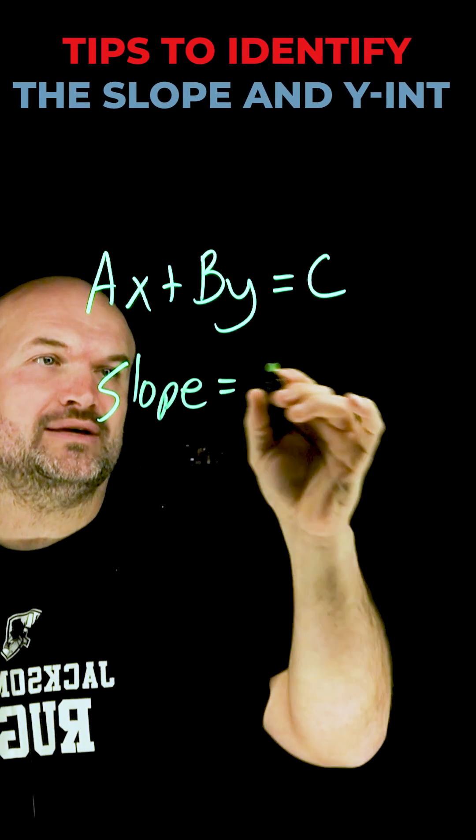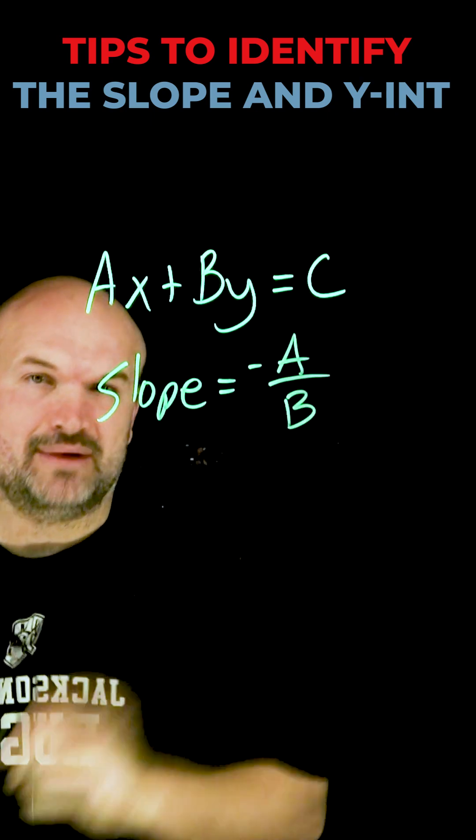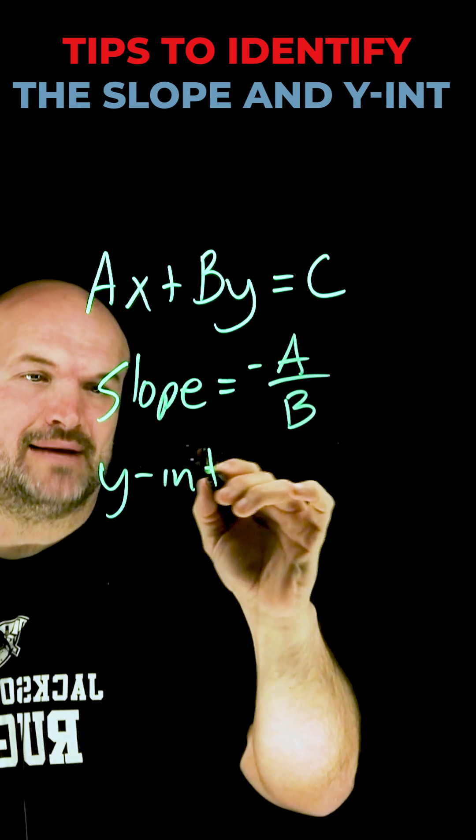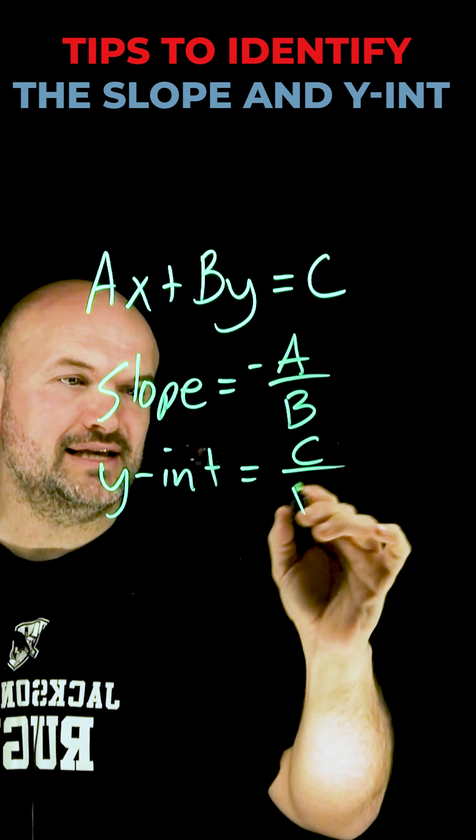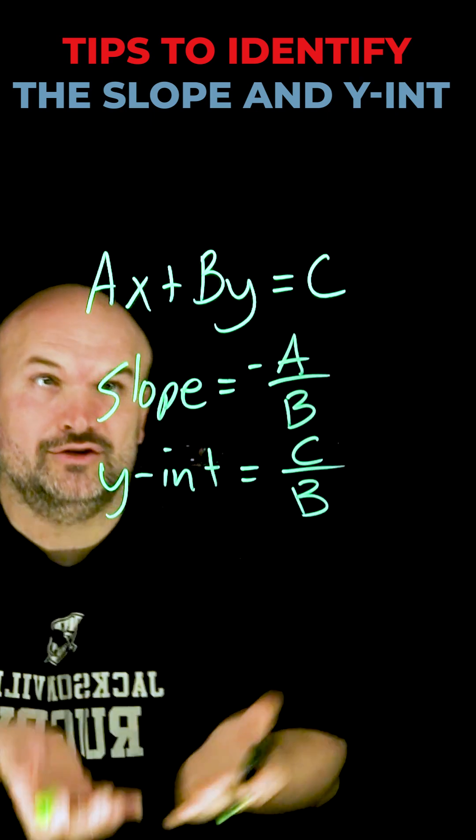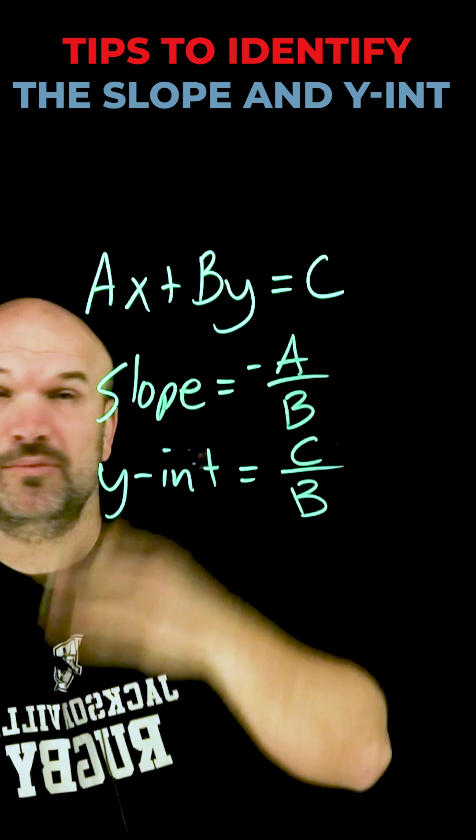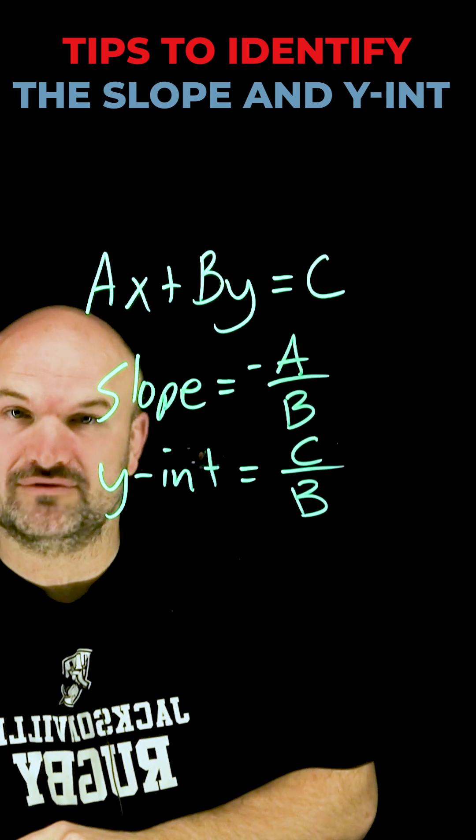The slope is going to equal the opposite of A divided by B. The y-intercept is simply going to be C over B. If you can remember that, you can quickly identify the slope for any linear equation that's in standard form.